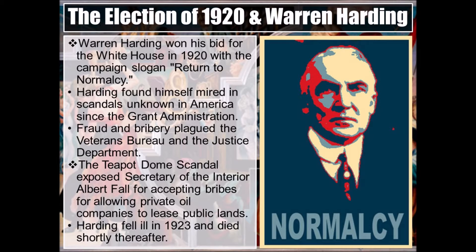Harding let Republicans, who dominated Congress by a three-to-one margin, initiate policy. His administration pushed for more streamlined government — cutting taxes, clamping down on unions, and having the Federal Reserve raise interest rates. Where men like Roosevelt and Wilson had dictated to their cabinets, Harding let his cabinet have free reign.